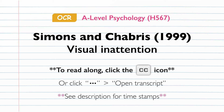Previous research played an important role in understanding perception with and without attention. However, the researchers in the study by Simons and Chabris wanted to test the same concepts, but with a more empirical approach, which they felt was lacking in some of the more recent studies.